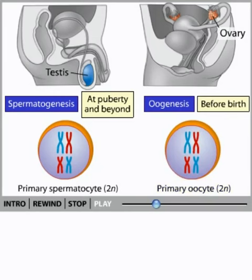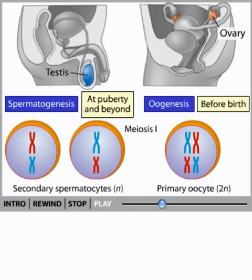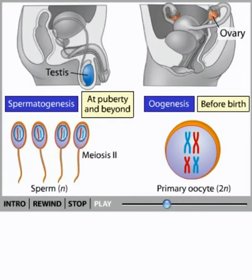In males, the primary spermatocytes undergo the process of meiosis. The first meiotic division, or meiosis I, produces two haploid secondary spermatocytes. The second meiotic division, or meiosis II, produces a total of four haploid cells that mature into sperm cells capable of fertilizing an egg.